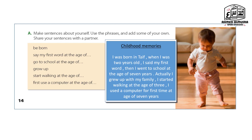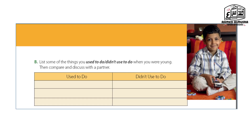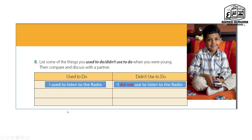Now listen to the next exercise — Exercise B. Exercise B is about habits you used to do in the past. We are going to choose three habits, combine what we used to do, and then turn them to the negative side.